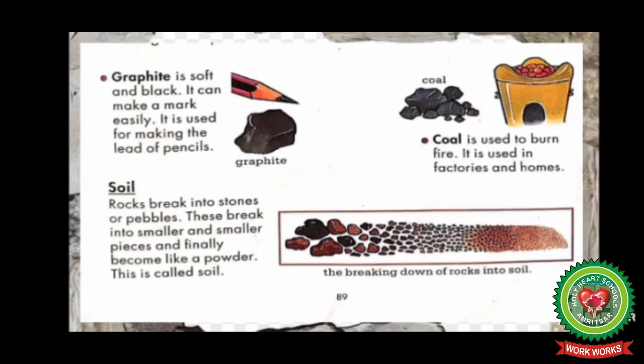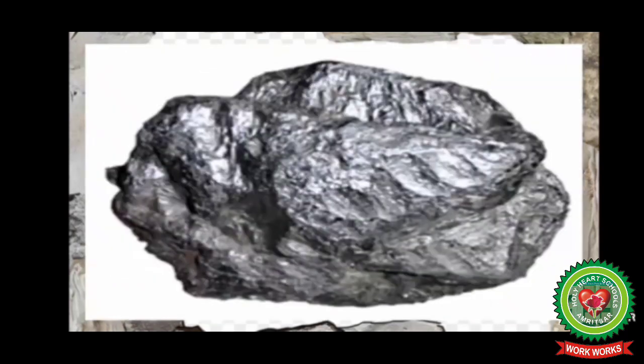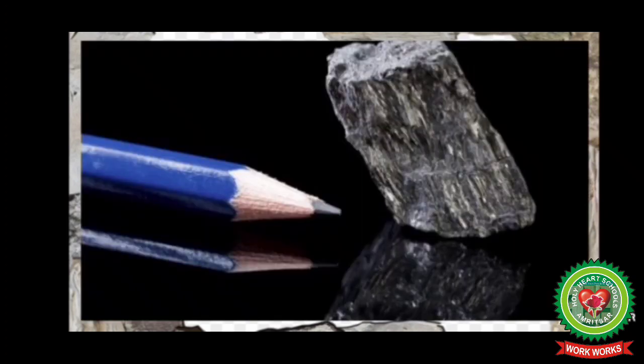The next one is graphite. Graphite is soft and black — it can make a mark easily. It is used for making the lead of pencils. Look at the picture of graphite. You all use pencils in class, and pencils are used to write and draw pictures.